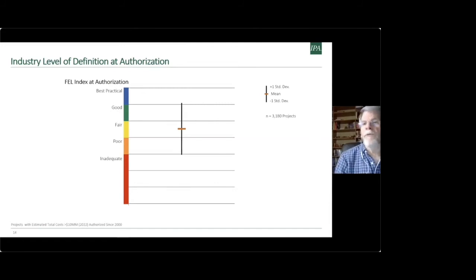Now, in my sample of almost 3,200 capital projects, this is showing where the average FEL index fell for these projects at their authorization. And they fell within the kind of the fair category, in the middle of the fair category, with a standard deviation. Some projects were better defined at authorization. And unfortunately, a fair number of projects don't complete nearly enough of that work that they should complete based on our research prior to authorization. So given this information about what do we know about the level of development of the front end loading? And earlier, I had shown you how we know the safety performance of projects after the project was completed.